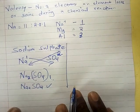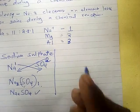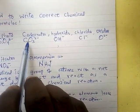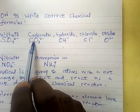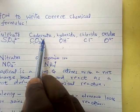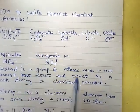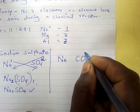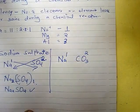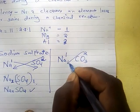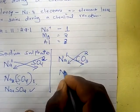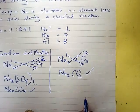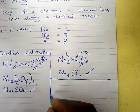Let me write sodium carbonate. We start with sodium, then carbonate. Carbonate is CO3²⁻, meaning the valency of carbonate is two. Sodium has a valency of one. Using the criss-cross method, we will have sodium 2, carbonate 1 — and that is the correct chemical formula for sodium carbonate: Na2CO3.